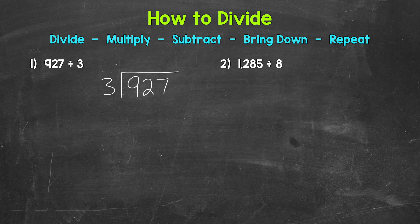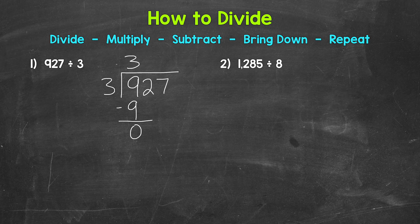Starting with divide: we have 9 divided by 3. How many whole groups of 3 in 9? How many 3's in 9? Well, 3 — and that hits 9 exactly. So we write our 3 up top. Now we multiply: 3 times 3 is 9. After we multiply, we subtract: 9 minus 9 is 0. After we subtract, we bring down the next digit, which is 2.